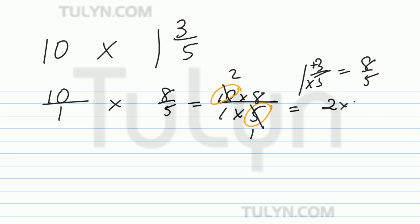So, 2 times 8 over 1 times 1. Always use the numbers that you crossed out. 2 times 8 is 16. 1 times 1 is 1. So 16 divided by 1 is 16. That's your final answer.